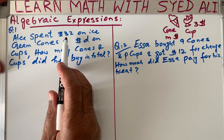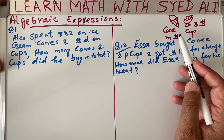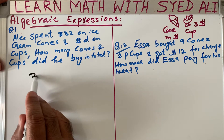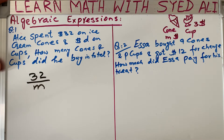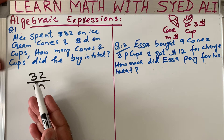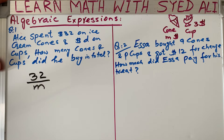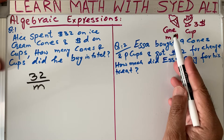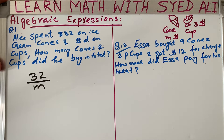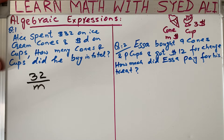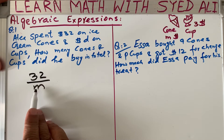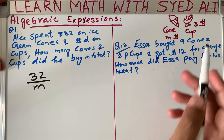Alex spent 32 dollars on ice cream cones. The cost of each cone is m dollars. So the number of cones he bought is 32 divided by m. For example, if the cone price is eight dollars, then 32 divided by 8 gives four cones. Because m is not known, we write 32/m as the number of cones Alex can buy.